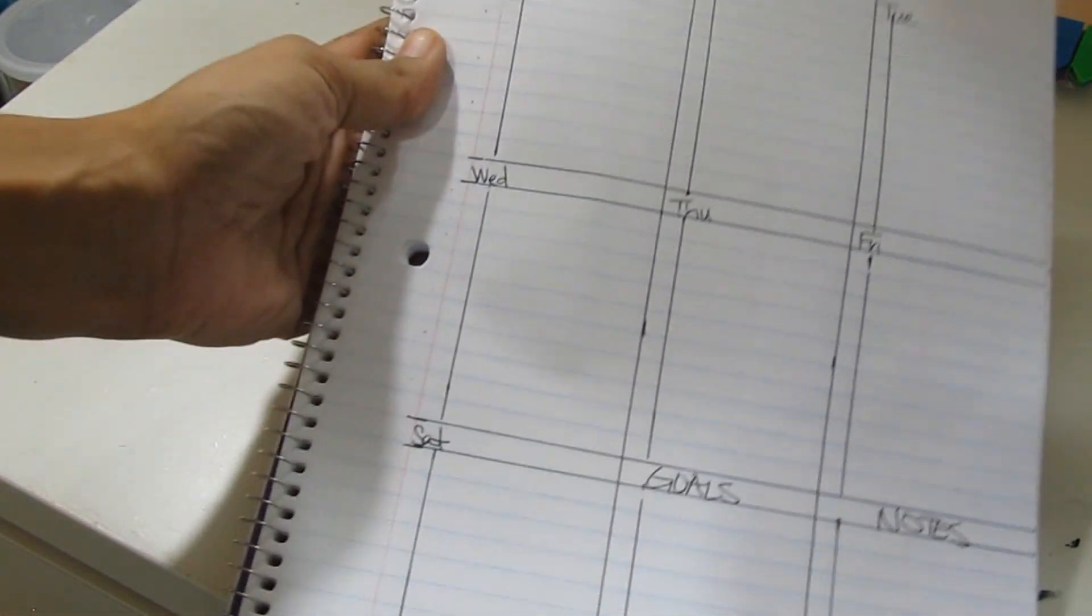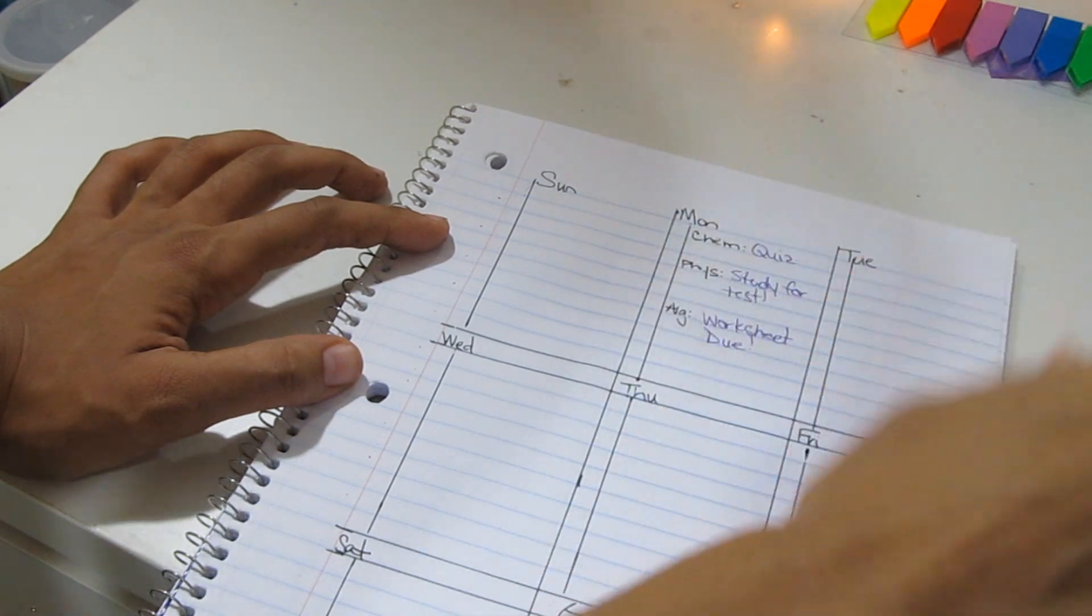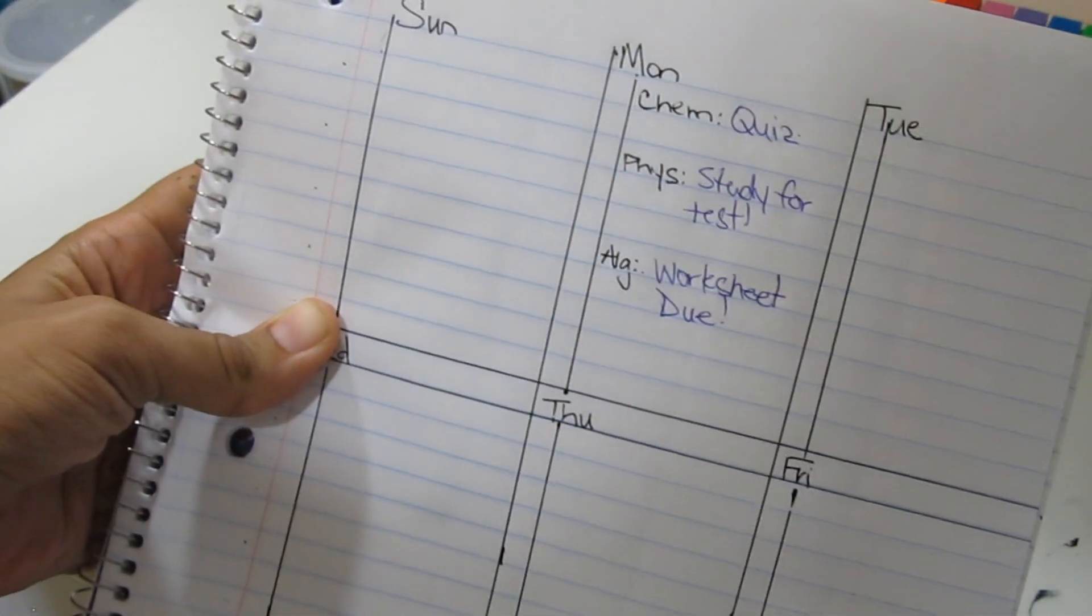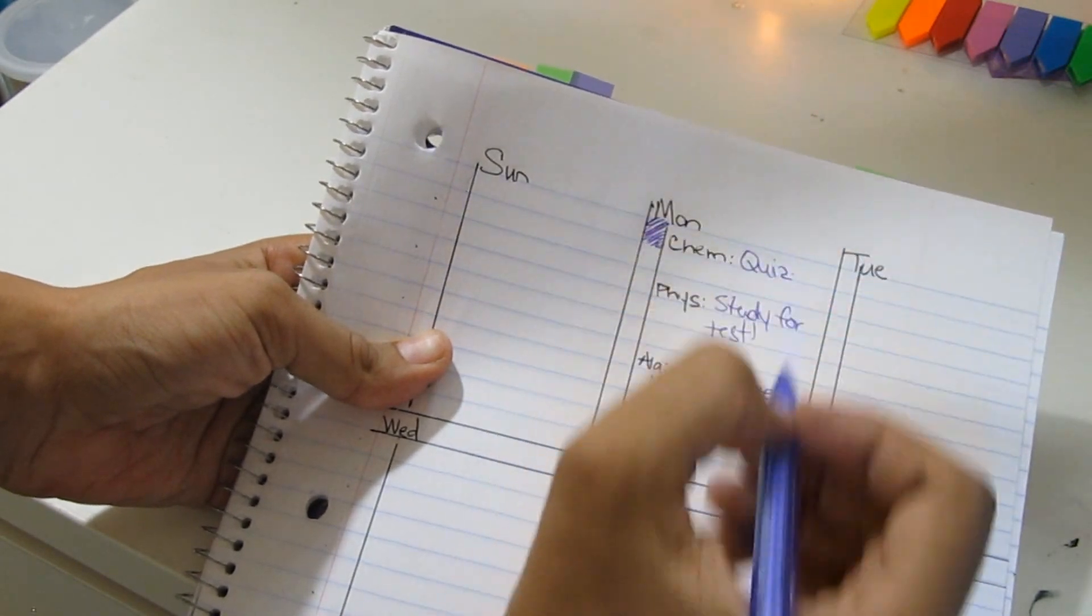Then I'll draw a second line about the width of my pinky and I like to draw that line so that I can cross things off of my list. I don't like making lines through the words. I just prefer to shade in the box on the side.